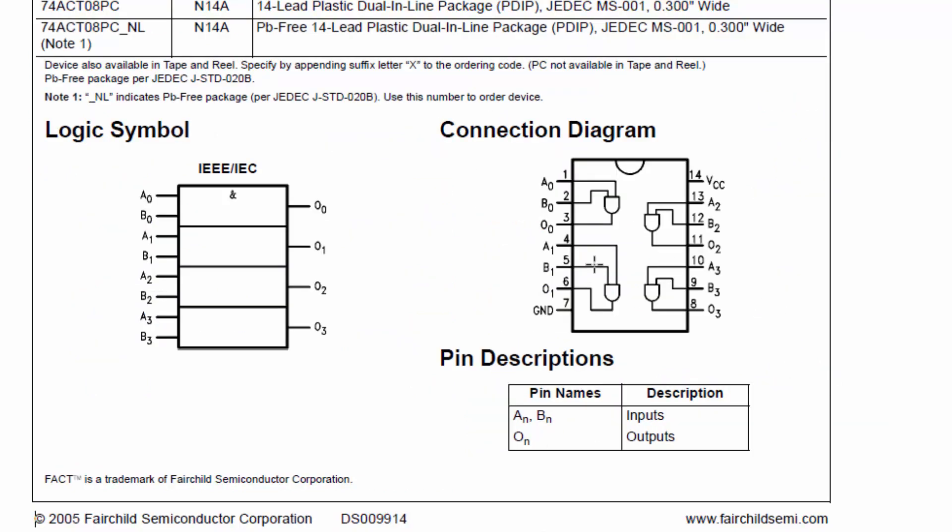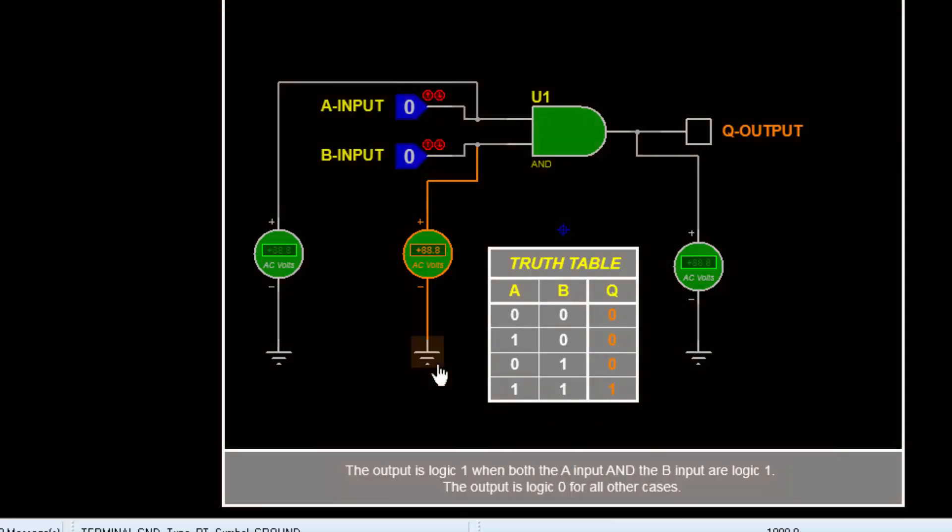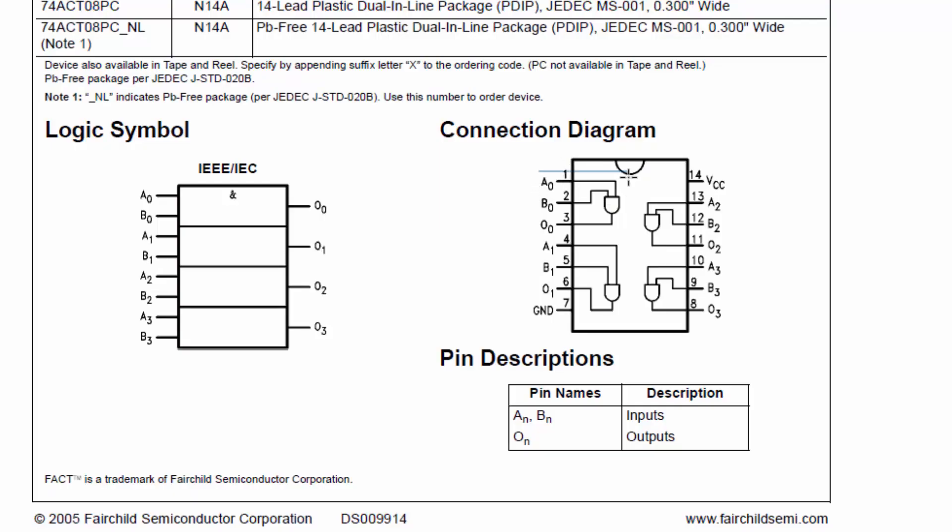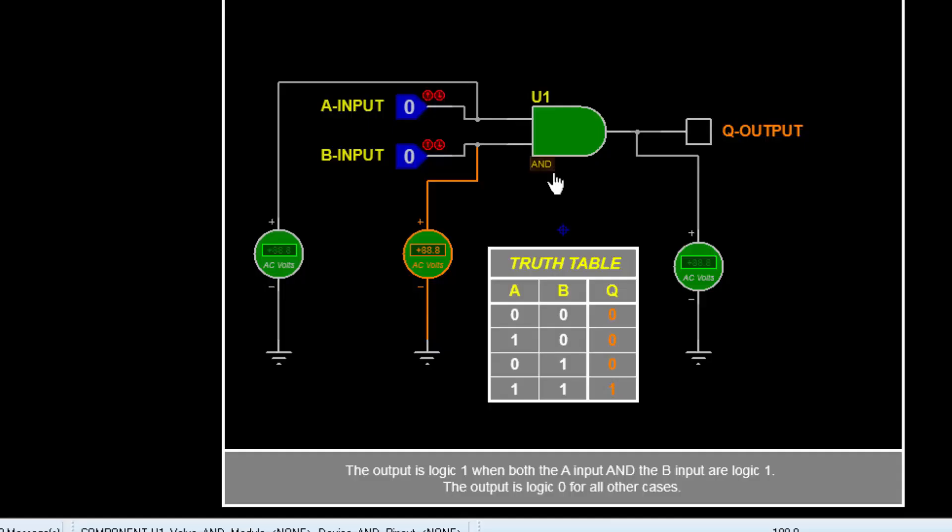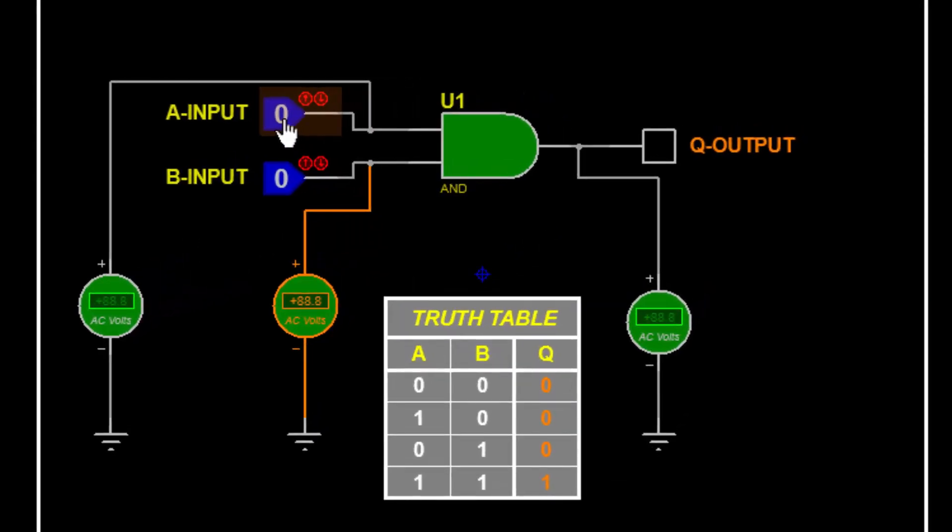Let's see the function. For function I simulated this circuit here. For function checking, I will just check only one gate. Here we have four gates, I will demonstrate just only one gate: AND gate.